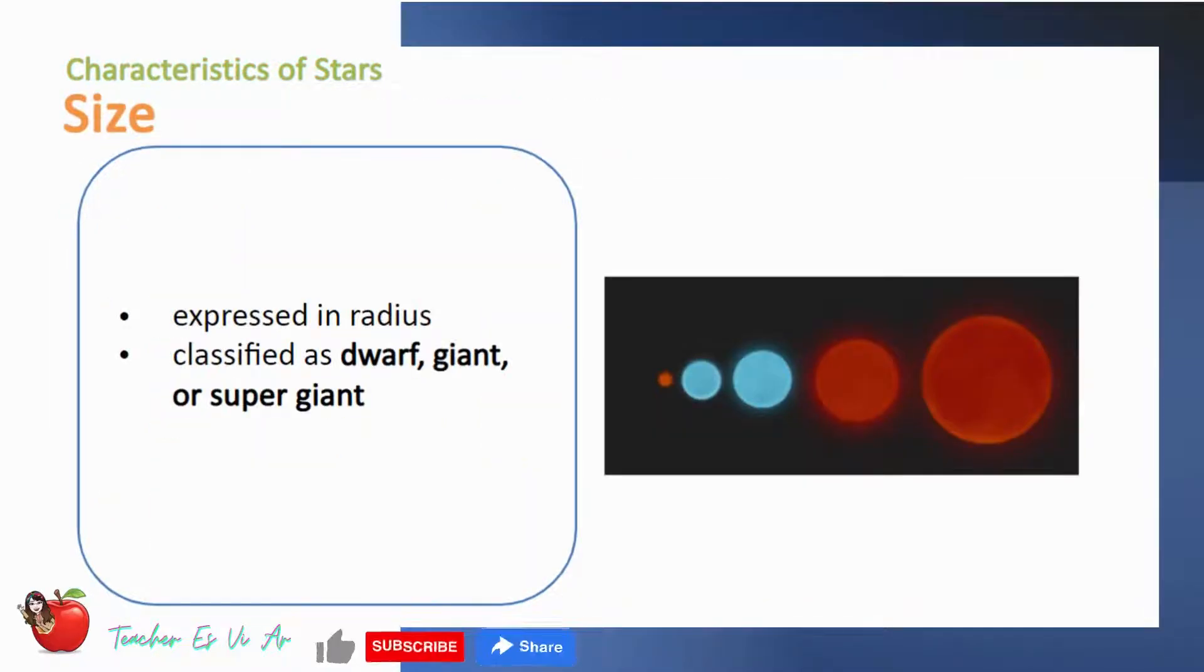Another characteristic of the star is the size. It is expressed in radius. Stars are classified as dwarf, giant, or supergiant.